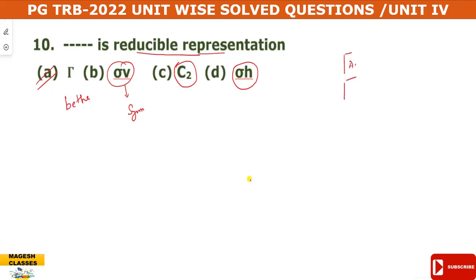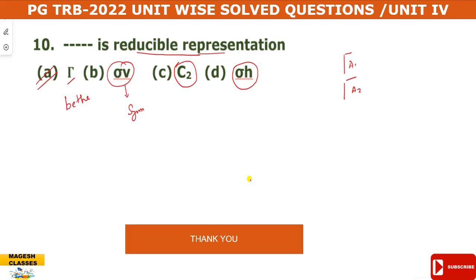In Mulliken notation, A1 and A2 are direct alignment labels. The reducible representation uses this Mulliken notation. This is the end of this presentation.